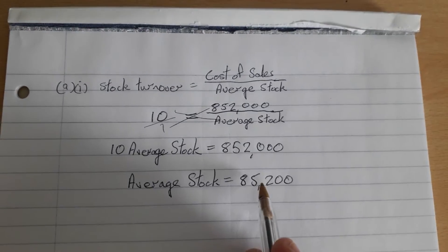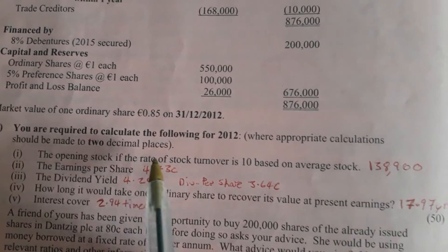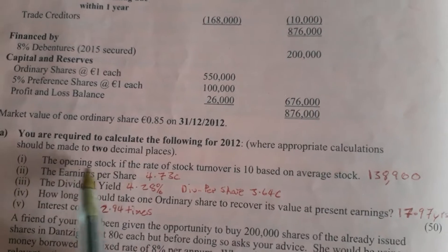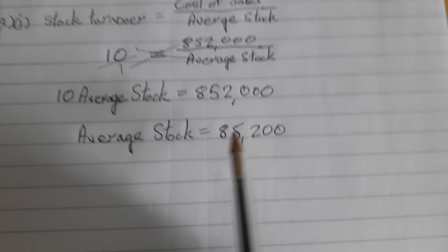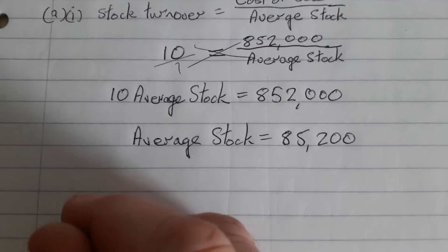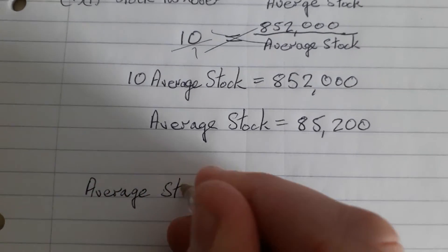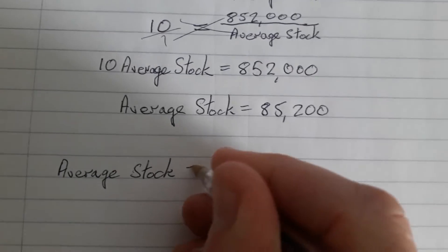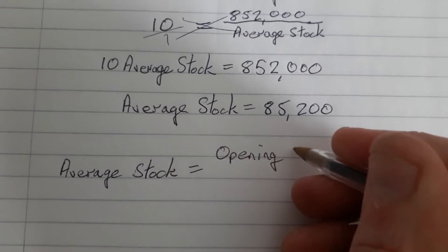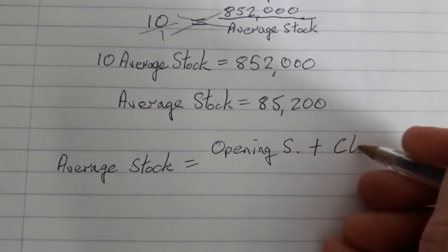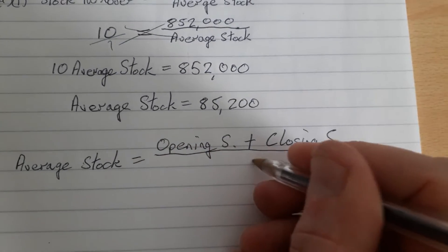So that's the average stock. Now we go back to the question — it says find the opening stock, and we know what the average stock is. So now we use the average stock formula. Writing down the formula first: average stock is equal to opening stock plus closing stock divided by 2.